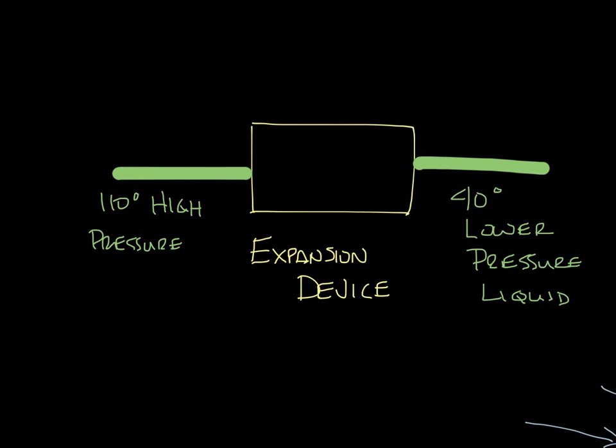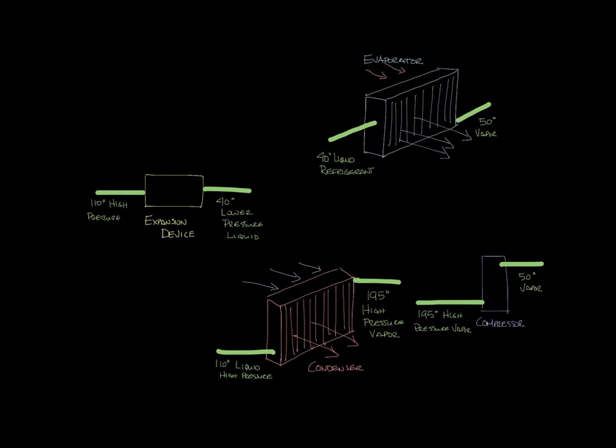Okay so let's zoom out and look at our whole system. You have the evaporator, the compressor, the condenser, and the expansion device. Now let's connect our refrigerant lines.